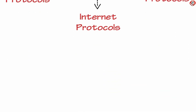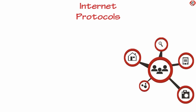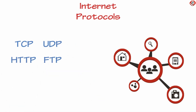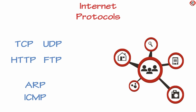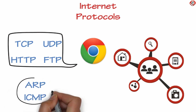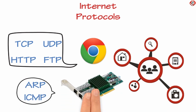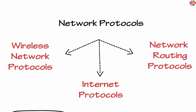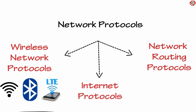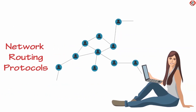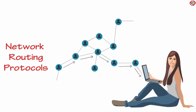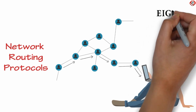Network protocols include routing protocols. The protocol types are called TCP, UDP, HTTP, FTP, and the browser protocols are called ARP and ICMP. The wireless network protocols are called Wi-Fi, Bluetooth, and LTE.